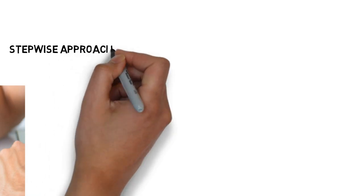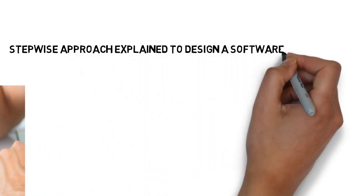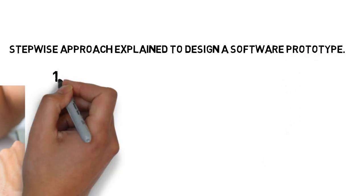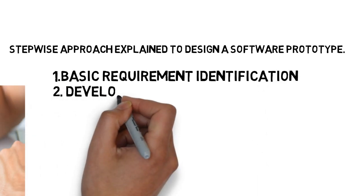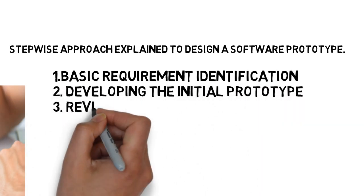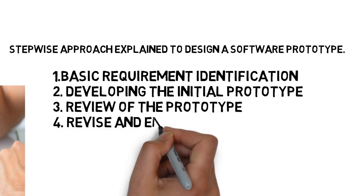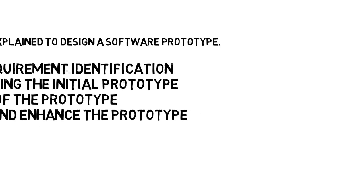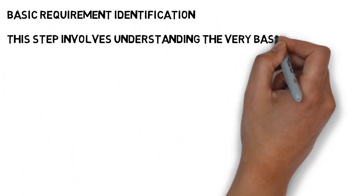Now we are going to discuss the stepwise approach of software prototyping. There are four steps to develop a prototype: first, basic requirement identification; second, developing the initial prototype; third, review of the prototype; and fourth, revise and enhance the prototype.